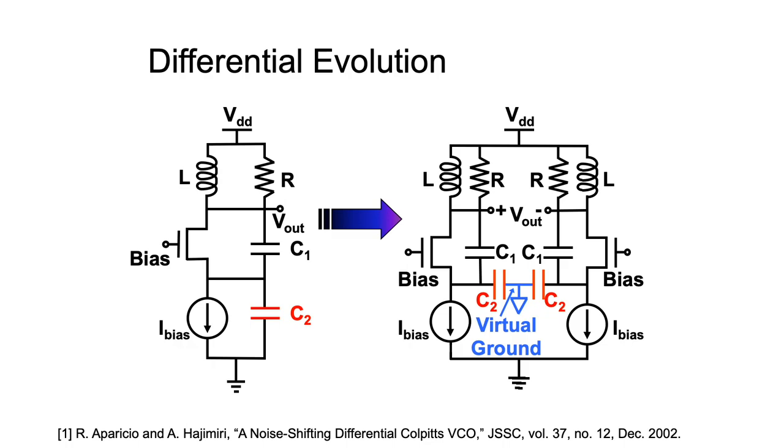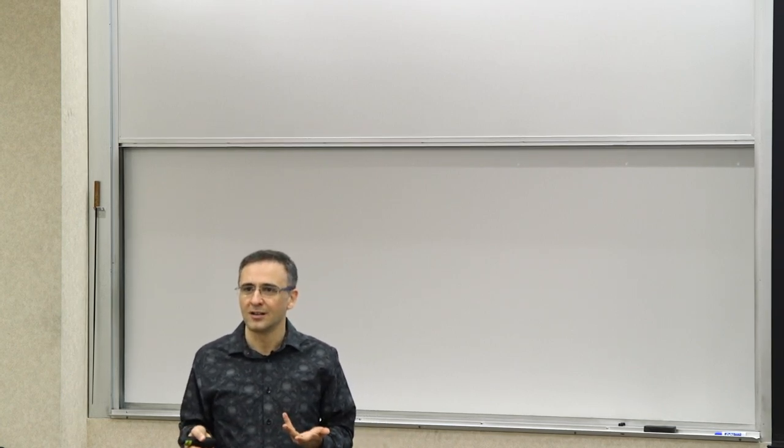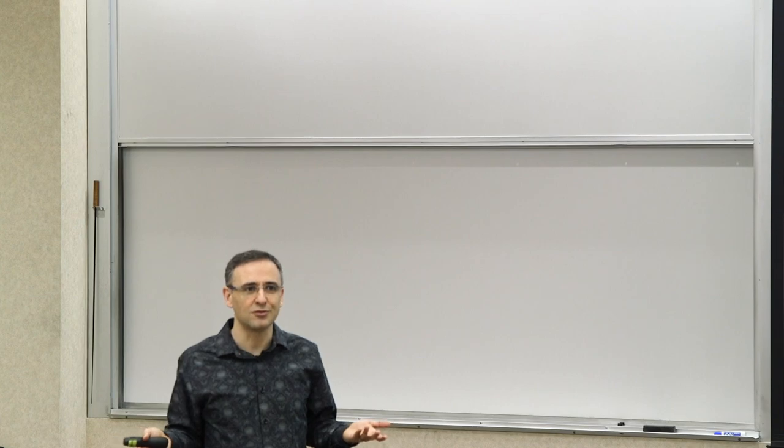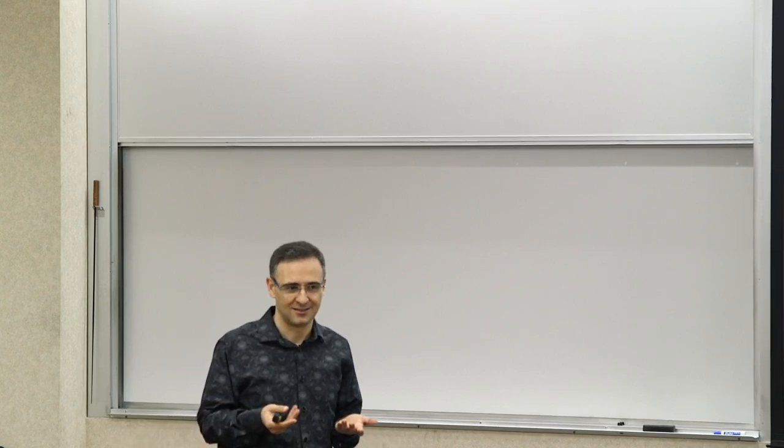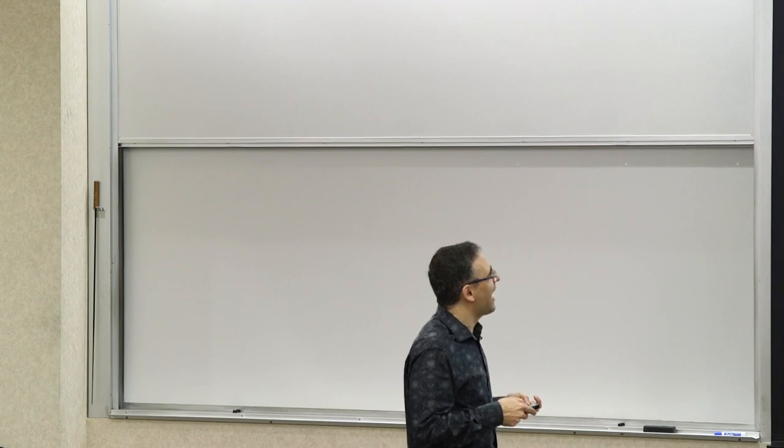Now if you remove this ground connection and you have two capacitors in series, well you can replace it with one capacitor, right, of half the value and cut your area by a factor of four. Because you went from two C2's to half a C2.